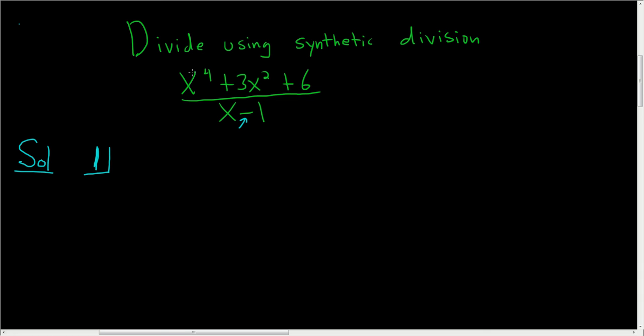Then you have to write the coefficients of whatever's in the numerator here. The coefficient here is 1. Here we're missing a power of x cubed, so we do have to think about 0x cubed. It really is there, so we have to include the 0. Then we have 3. And here we're missing a power of x, so we do have to think about the 0x. So we include a 0. And then here we have 6. And then we draw a funny line.